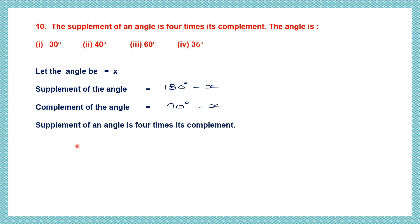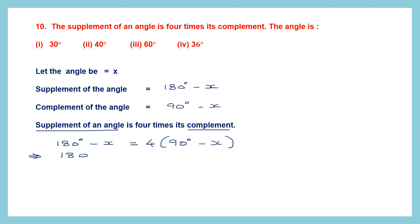The question says the supplement of the angle equals 4 times its complement. So the equation is: 180 minus X equals 4 times (90 minus X). Expanding: 180 minus X equals 360 minus 4X. Bringing X terms to one side: minus X plus 4X equals 360 minus 180. So 3X equals 180.